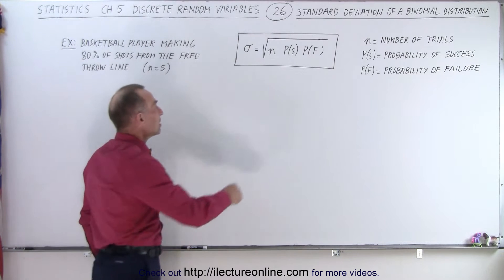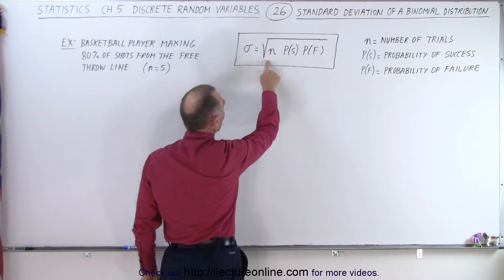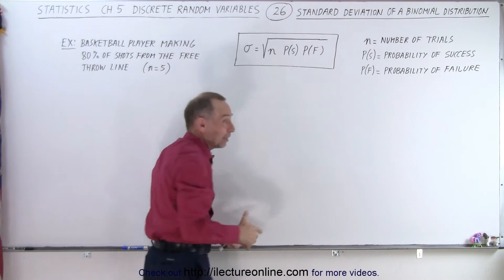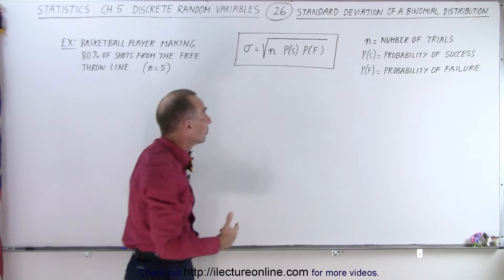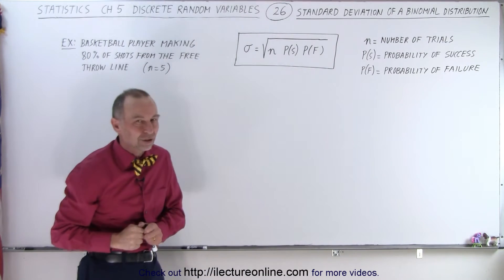So the equation is that the standard deviation, the Greek letter sigma, is equal to the square root of the number of attempts times the probability of success, meaning the probability that he'll make a basket, times the probability of failure that he will miss the basket.